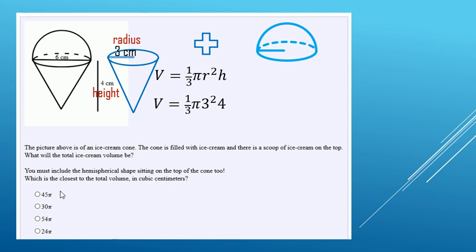Now, looking at all of our possible answers, they are all in terms of pi. So that means when we go to do our calculations, we're not going to multiply by pi, we'll save that till the end. Three squared makes nine, divided by three is three, times four is going to be 12 times pi, or 12 pi.